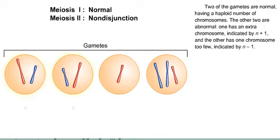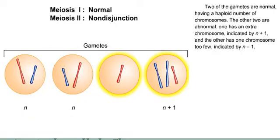Two of the gametes are normal, having a haploid number of chromosomes. The other two are abnormal. One has an extra chromosome, indicated by N plus 1, and the other has one chromosome too few, indicated by N minus 1.